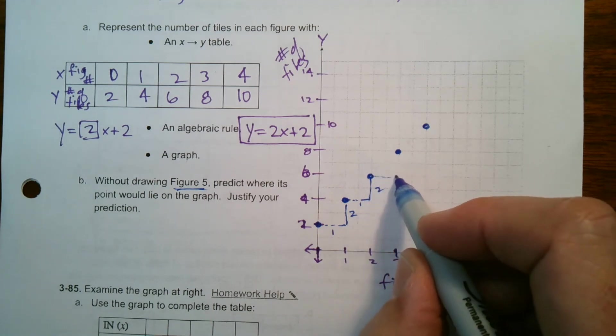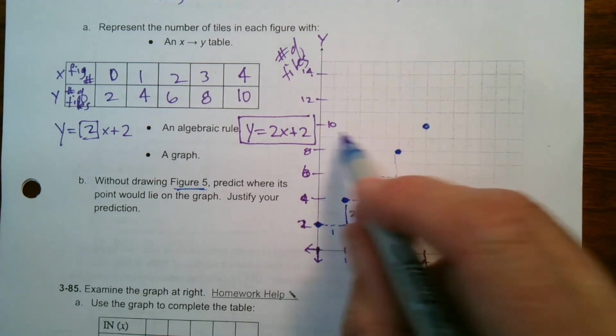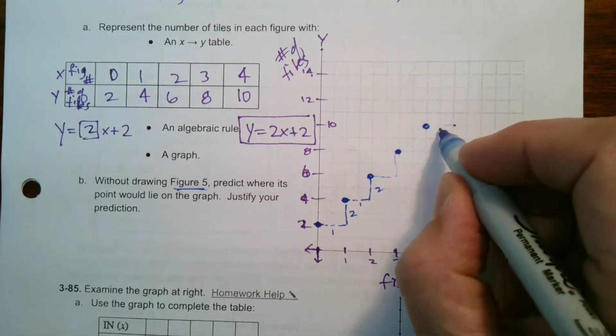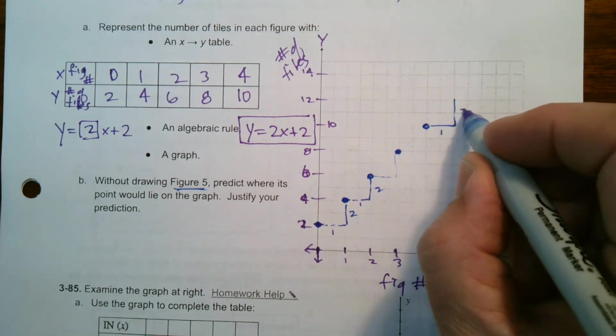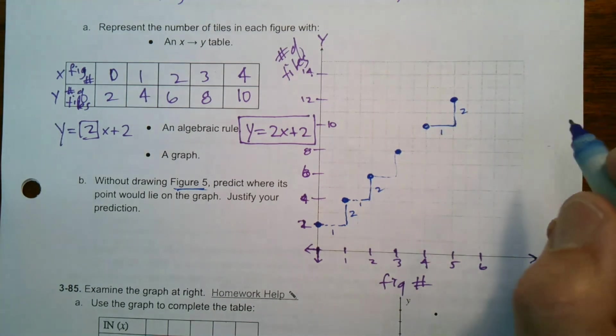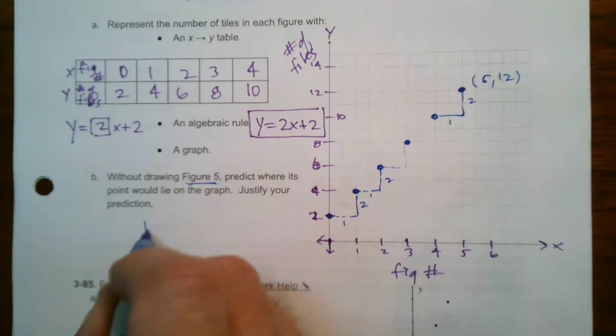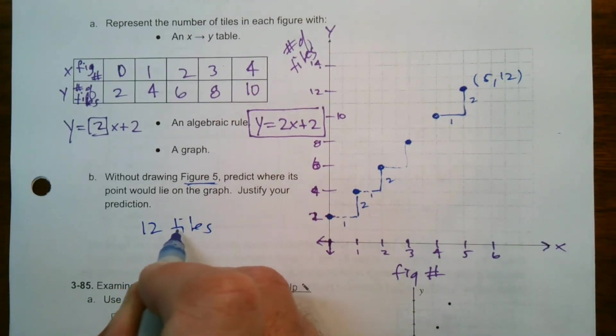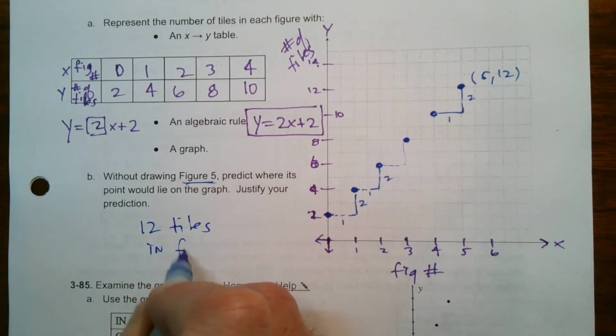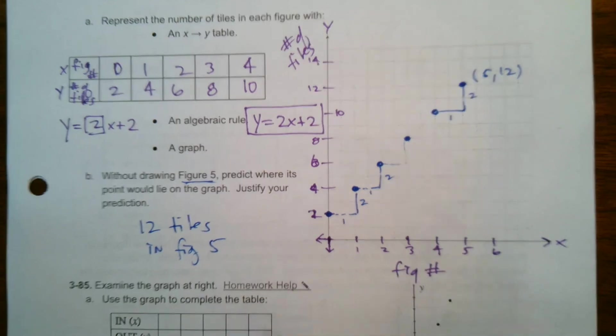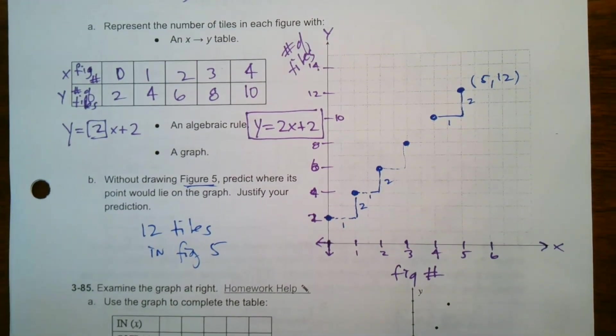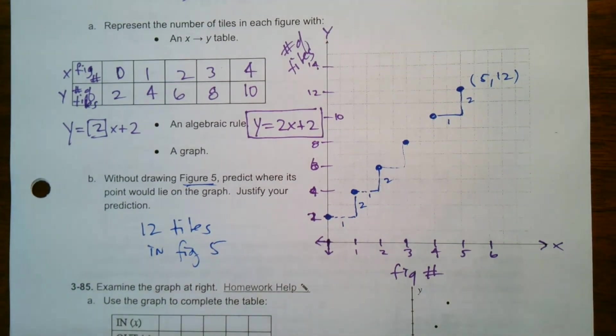So my pattern is one to two, one to two when I think about the numbers. So I'm going to do it again. One, so I'm going to go by one and go up two. So right there is my fifth one. So that would be at five twelve, so twelve tiles in figure five. Okay, all right there we go.